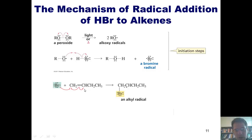If this bromine formed a bond with the internal carbon, I would end up getting a radical on the external carbon, which would be less stable. So this is why the bromine goes on the external carbon, because it gives me the more stable internal carbon radical.